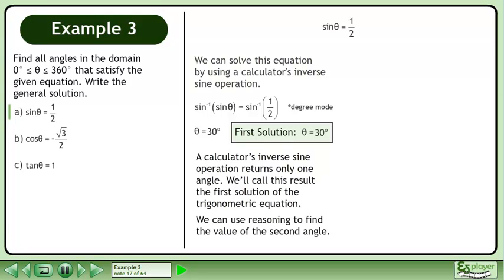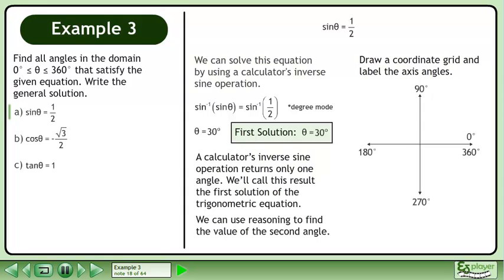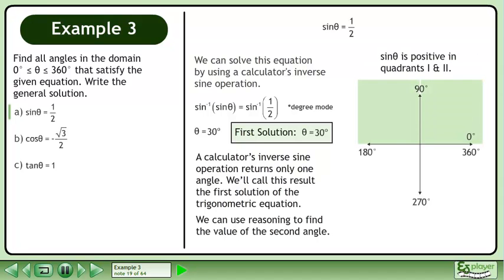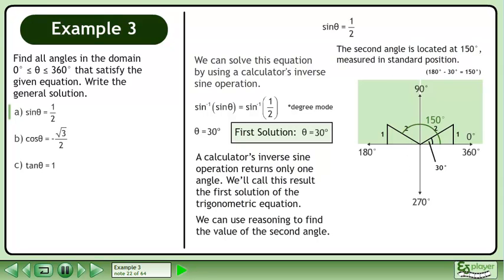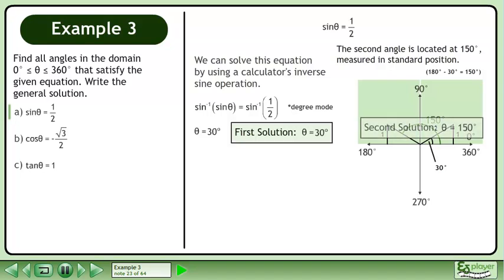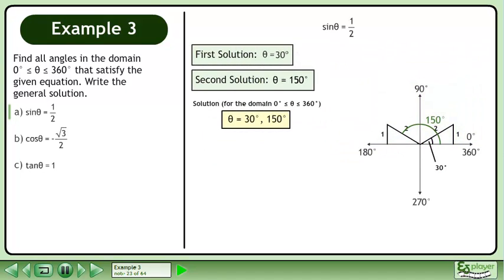We can use reasoning to find the value of the second angle. Draw a coordinate grid and label the axis angles. Sin θ is positive in quadrants 1 and 2. We can draw two triangles with an opposite side of 1 and a hypotenuse of 2. Each triangle has a reference angle of 30 degrees. The second angle is located at 150 degrees, measured in standard position.